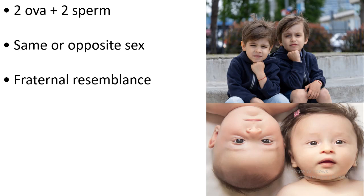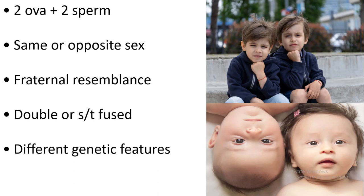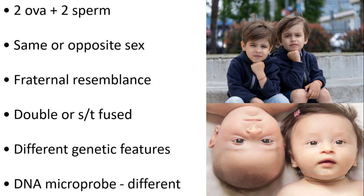Dizygotic twins can look like brothers and sisters — that simply means dizygotic twins are normally non-identical twins. Dizygotic twins can either be double or fused; this will be explained later on. Take note that dizygotic twins have different genetic features, which simply means that their DNA profile is also different.